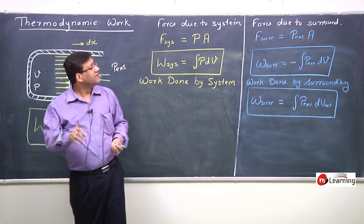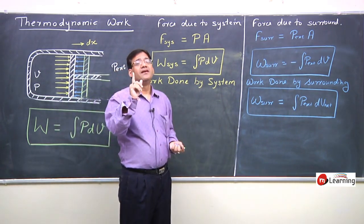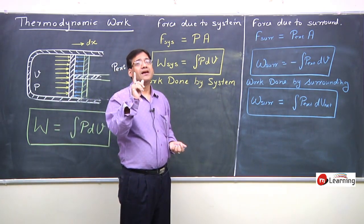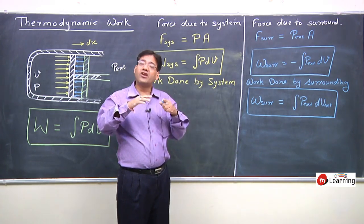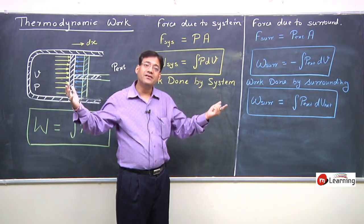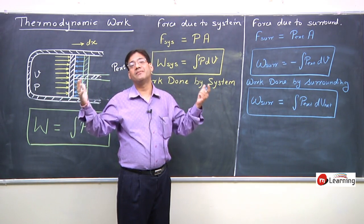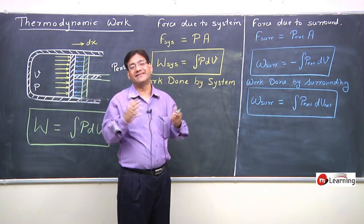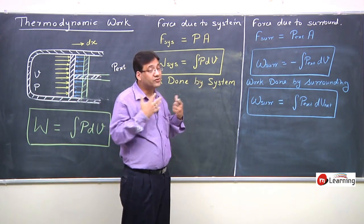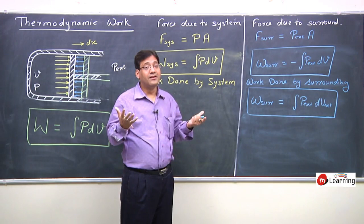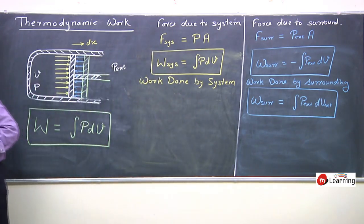To determine work done by system, under the integral sign write the system's pressure and system's dV. To determine work done by surrounding, under the integral sign write surrounding's pressure and surrounding's dV. Work done during any thermodynamic process is ∫P dV. Work done by surrounding is ∫P_external dV_external, and dV_external = −dV. There would be two cases: either the volume of the system is increasing or the volume of the system is decreasing.